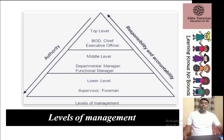Now we will discuss the levels of management. As you can see on your screen, there is a triangular shape designed. In this triangular shape, two arrows are also drawn. This represents the levels of management, which are divided into three parts: the first is the top level, the second is the middle level, and the last is the lower level. Responsibility and accountability increase from bottom to top, while authority decreases from top to bottom.